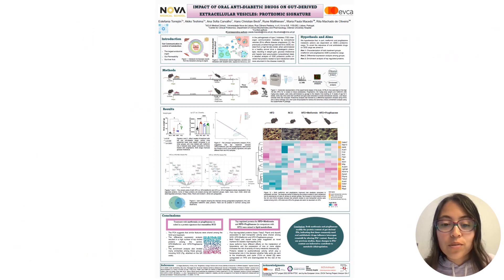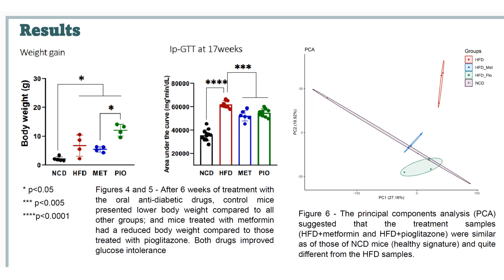Now we go to the results. After six weeks of treatment, control mice presented lower body weight compared to all other groups, and mice treated with metformin had a reduced body weight compared to those treated with pioglitazone. Both drugs improved glucose intolerance in comparison with the high-fat diet. A principal component analysis was then performed on the output of the proteomics dataset, and the results suggested that the treated groups had a similar signature to the control or normal chow diet group, and on the contrary, they were very different from the high-fat diet group.